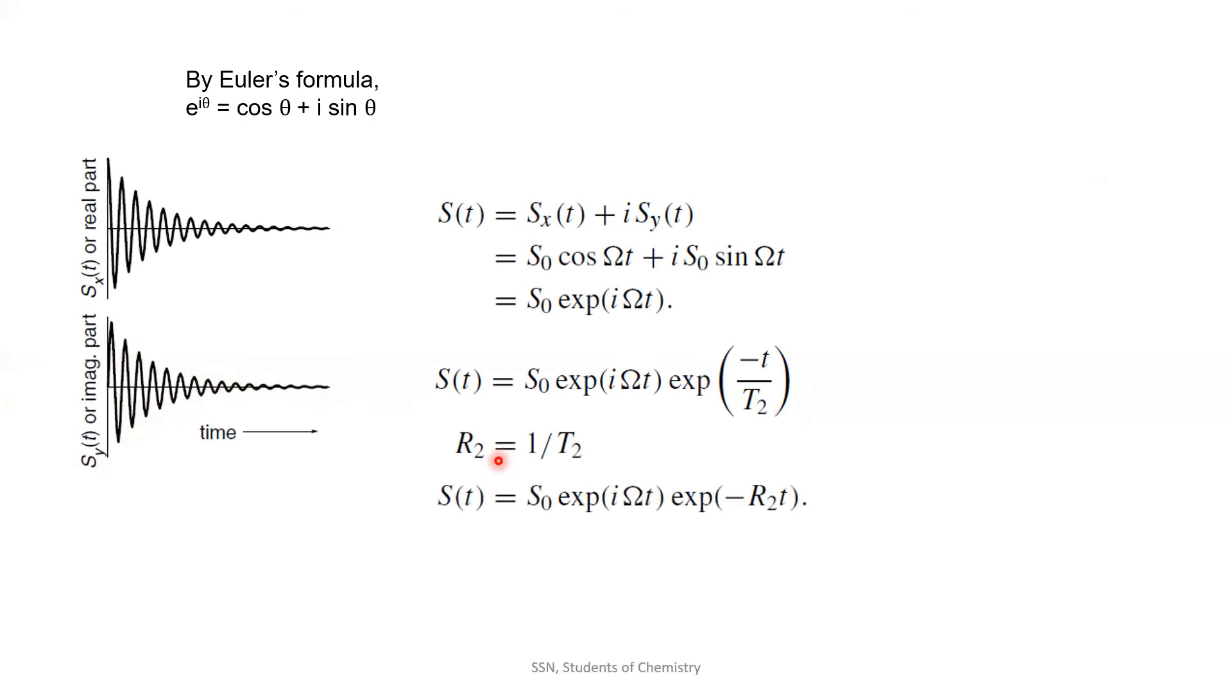If we want to depict this signal as a spectrum, then the signal which starts with an initial value will show an absorption spectrum, and the signal which starts with zero would show a dispersion spectrum. The shape of this peak is known as Laurentian peak, and hence we call this spectrum as absorption Laurentian and dispersion Laurentian. In NMR, we use only absorption Laurentian.